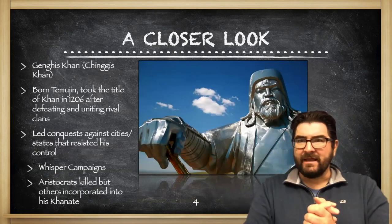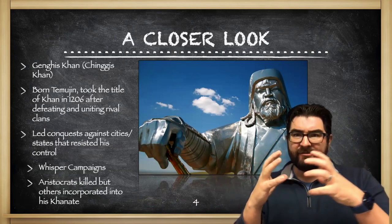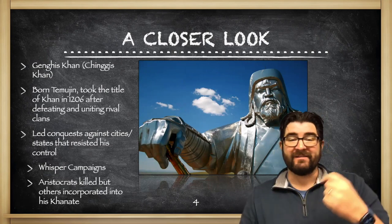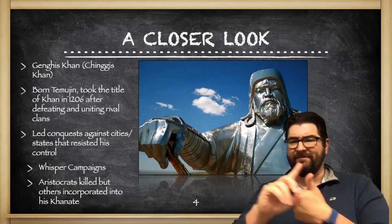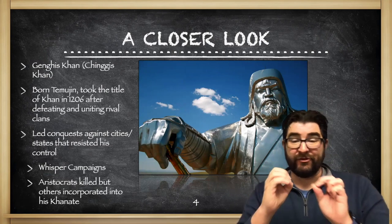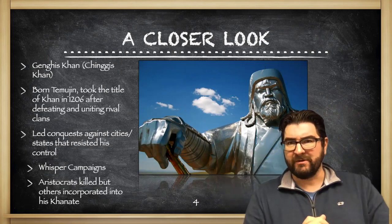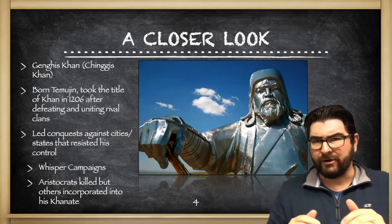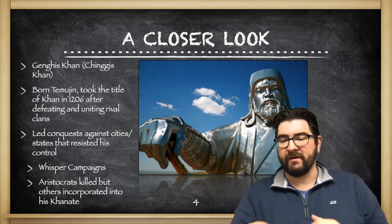The Mongols have their beginning as a world power with Genghis Khan. Genghis Khan is born Temujin, but after 1206, as he unites rival Mongol clans, he takes on the name Great Khan, or Genghis Khan. He's going to lead conquests in cities and states across the region that will resist his control. A lot of strategies like feigned retreats, tightly organized military units, and whisper campaigns — where survivors from conquered cities will be sent to neighboring cities to let them know of the danger the Mongols possess, in hopes of getting cities to just give in before the Mongols ever get there. As new cities and regions are conquered, leaders and aristocrats are often killed, but others in the community are incorporated into the Mongol empire.